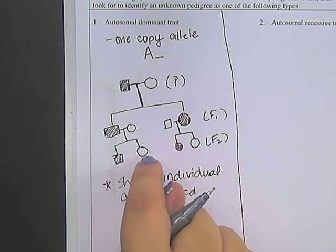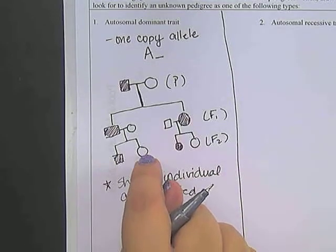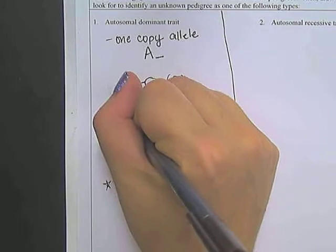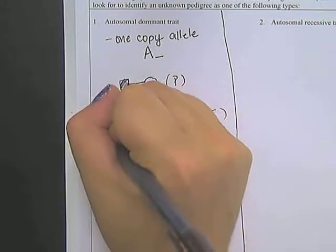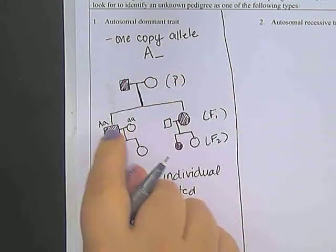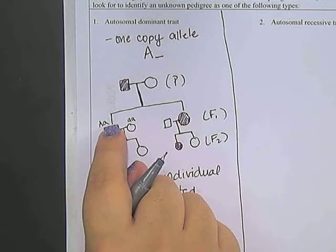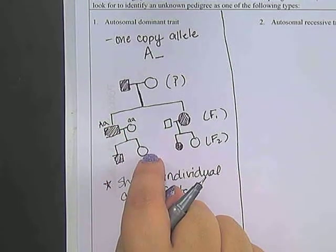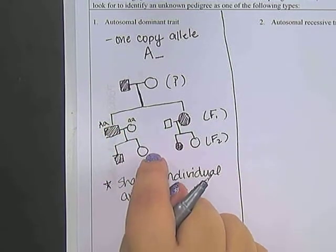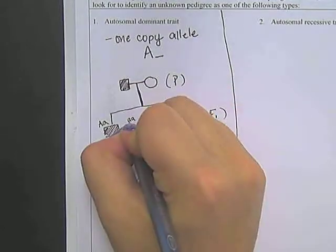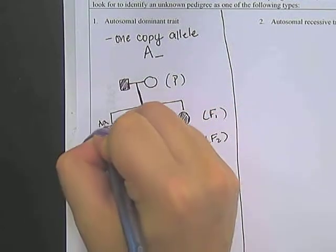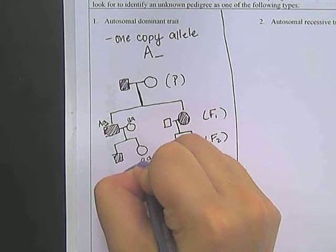So the reason why we can color this one in is because the mother is little a, little a, and the father must be big A, little a. Because the only way that this child could be recessive is if she inherited one of the a's from her mother, and she inherited the little a from her father.